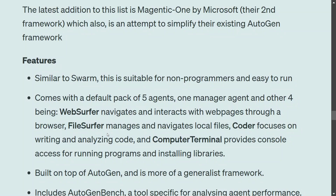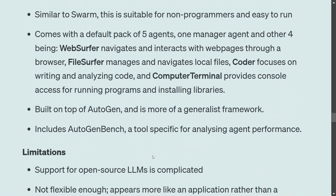Magentic One comes with a pack of five agents: one manager agent and four others — a web surfer, file surfer, coder, and computer terminal. With these four agents, most generic tasks should be covered. It is built on top of AutoGen and includes a tool specifically for analyzing agent performance, which is a new feature not present in any of the other frameworks.